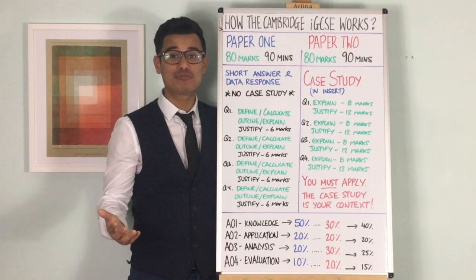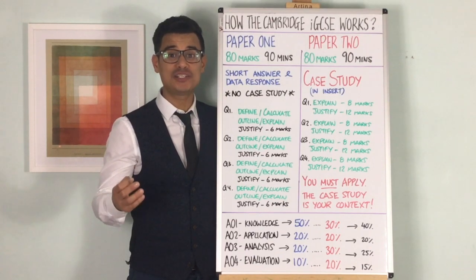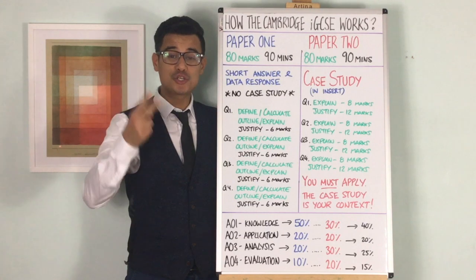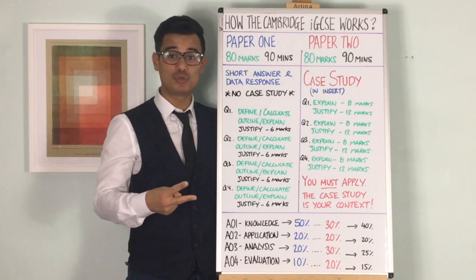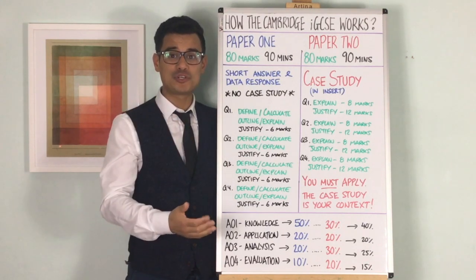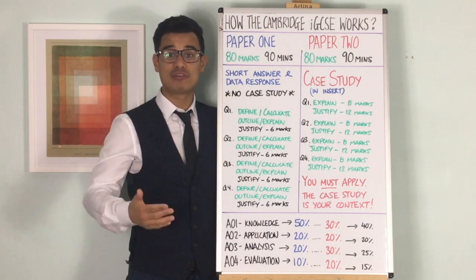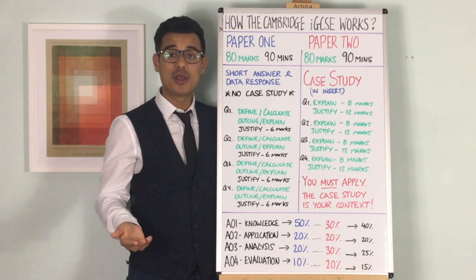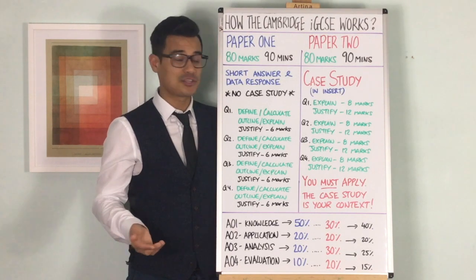Let's have a session on the Cambridge IGCSE Business and how the GCSE works. There are two papers that you will do: Paper 1 and Paper 2, but they are very different to each other. Let's go through Paper 1 first.